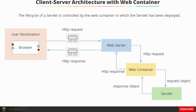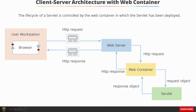Here we see the client-server architecture with web container. The lifecycle of a servlet is controlled by the web container in which the servlet has been deployed. The client browser sends an HTTP request to the web server, which forwards it to the web container. The web container forwards the request to the servlet as a request object. The servlet generates a response object, which is converted into an HTTP response by the web container and sent back to the client browser.